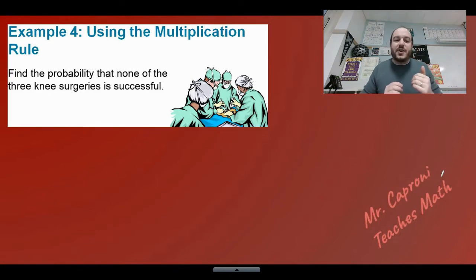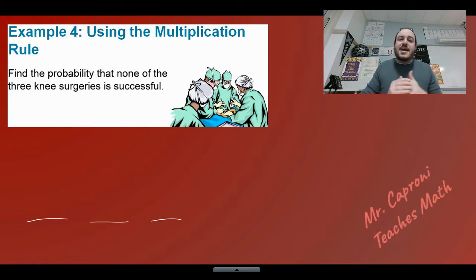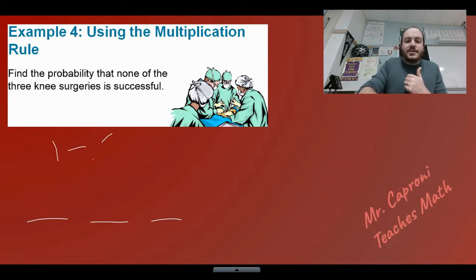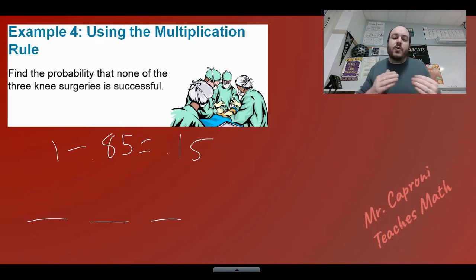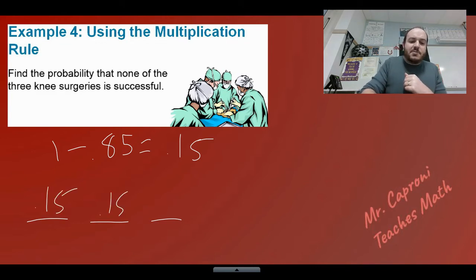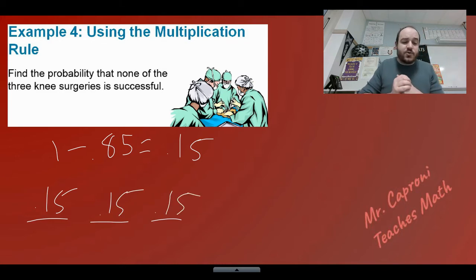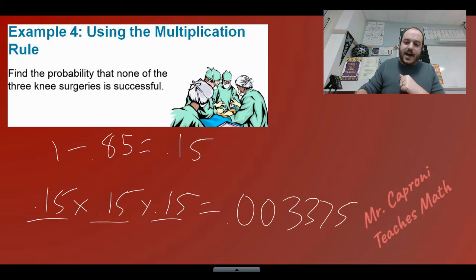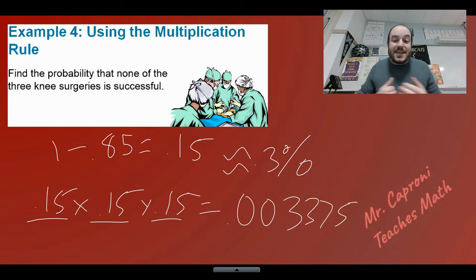Now a trickier situation: find the probability that none of the three knee surgeries are successful. Using the complement rule, one minus 0.85 gives us 0.15 — our probability of failure. The probability that all three fail is 0.15 times 0.15 times 0.15, applying the same independence rule. Multiply those together and you get about 0.003375, or roughly a 0.3% chance — good news, since there's less than a 1% chance all three surgeries fail.